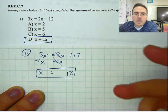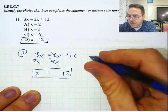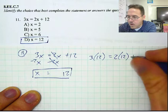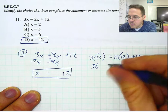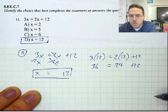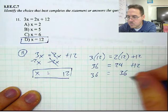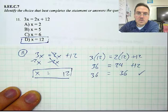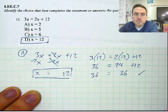We could have done this the long way by plugging in 12: 3 times 12 equals 2 times 12 plus 12. Well, 3 times 12 is 36, 2 times 12 is 24, and 24 plus 12 is 36 — equals 36. That's a true statement. So if you wanted to go the long way, you can just plug in numbers and see which one comes out to be true, or you can do the algebraic way and just figure it out.